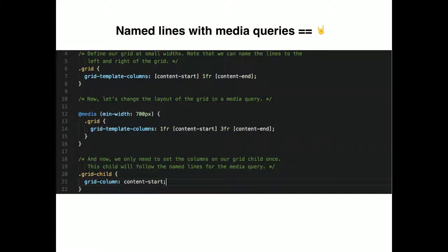We have grid-template-columns where the left line is called 'content-start', then 1fr, then 'content-end.' At 700 pixels we have a 1fr column, and then we have a 'content-start' line, 3fr columns — that's 75%, 25% — then content-end. Your grid child can just reference content-start to content-end, and it will automatically shift over at different breakpoints without any media queries on the child itself.